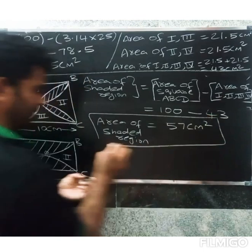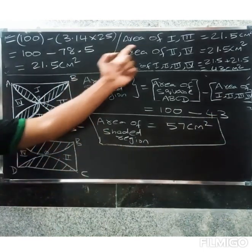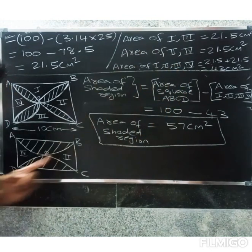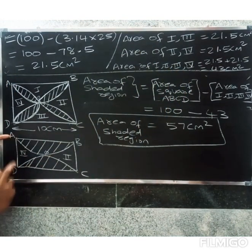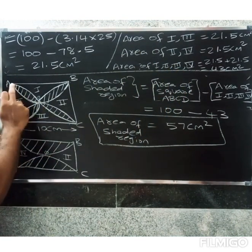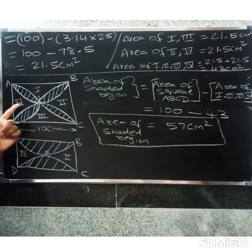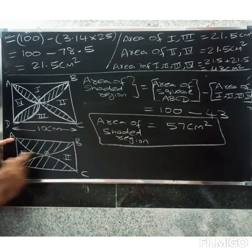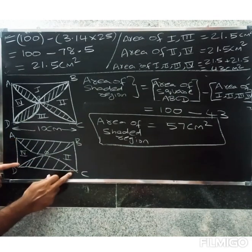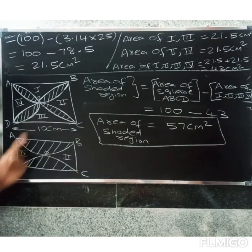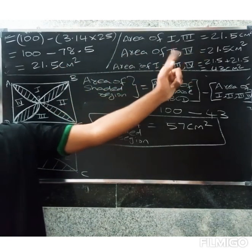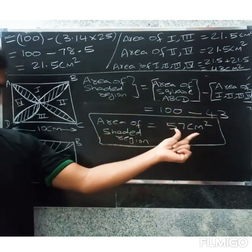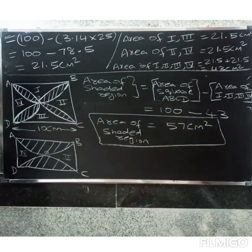So the total area of regions 1, 2, 3, 4 equals 21.5 plus 21.5 equals 43 centimeter square. Therefore, the area of the shaded region equals the area of the square minus the area of 1, 2, 3, 4: 100 minus 43 equals 57 centimeter square. So the area of the shaded region equals 57 centimeter square. Thank you.